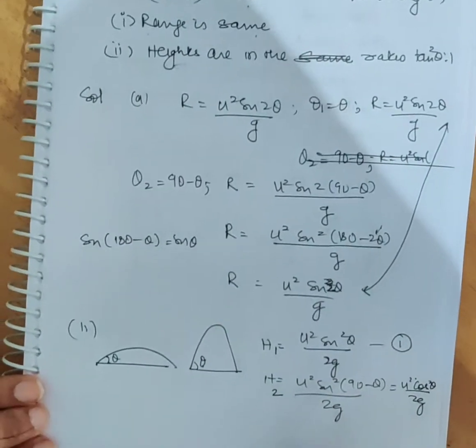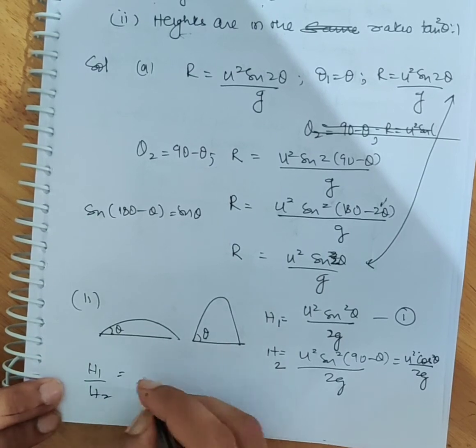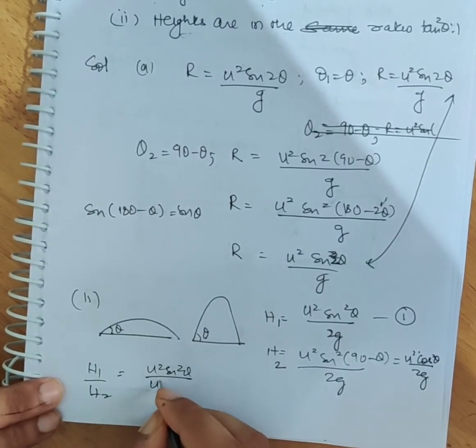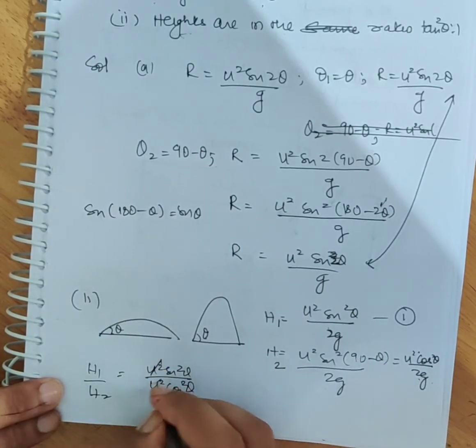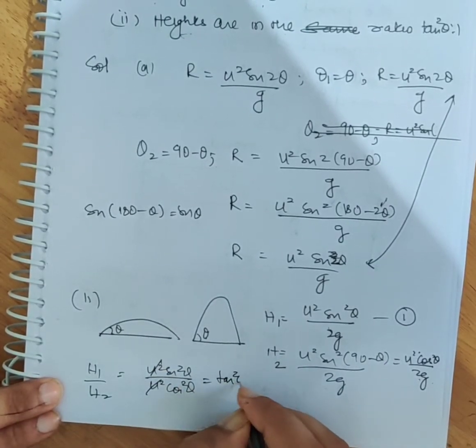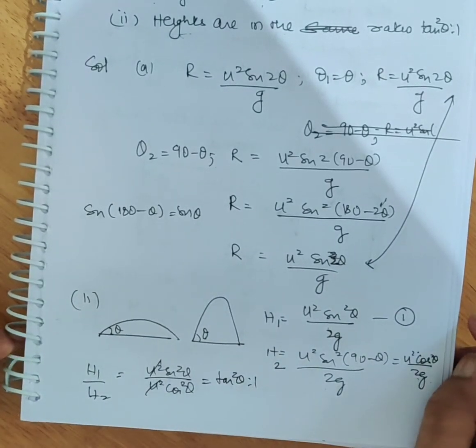Now we find the ratio. H₁ by H₂ will be u²sin²θ upon u²cos²θ. You can see that u² and 2g cancel. What remains? tan²θ is to 1. This is our second part.